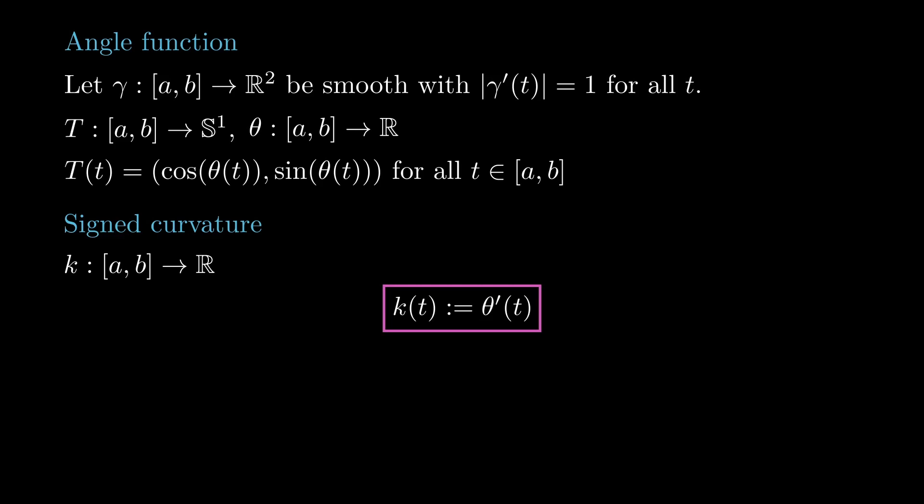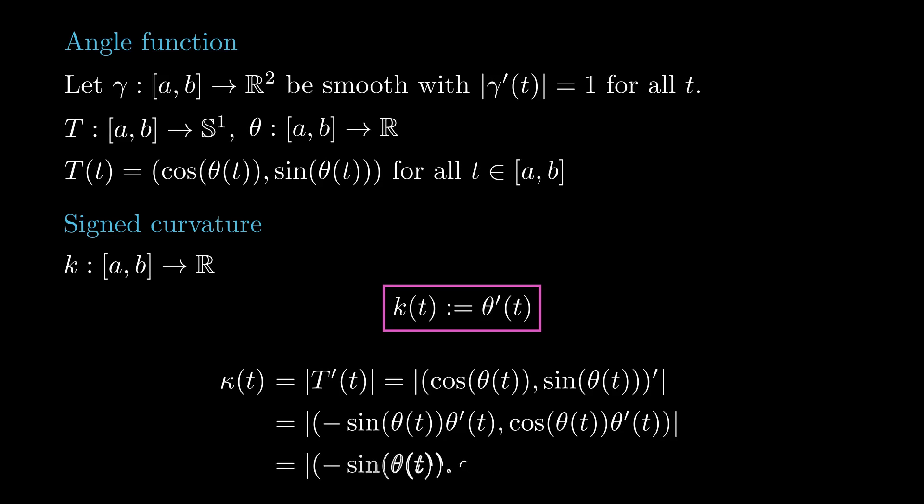The relationship between the signed curvature and the absolute curvature is straightforward. Recall that for a parametrization by arc length, the absolute curvature is the length of T' which, after expressing T in terms of theta, becomes simply the absolute value of the signed curvature.